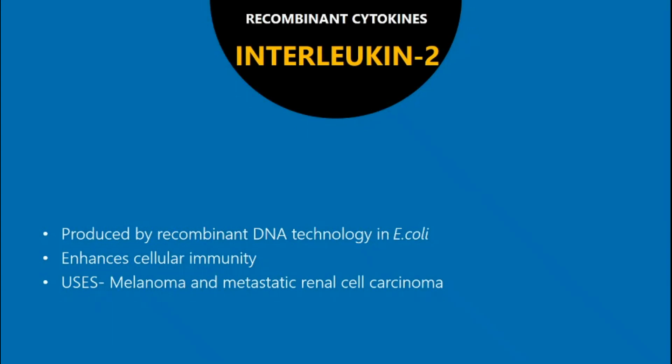Now we come to interleukin-2. Human interleukin-2 is produced by recombinant DNA technology in Escherichia coli. It enhances cellular immunity with lymphocytosis, eosinophilia, thrombocytopenia and release of multiple cytokines. It is indicated for the treatment of melanoma and metastatic renal cell carcinoma.